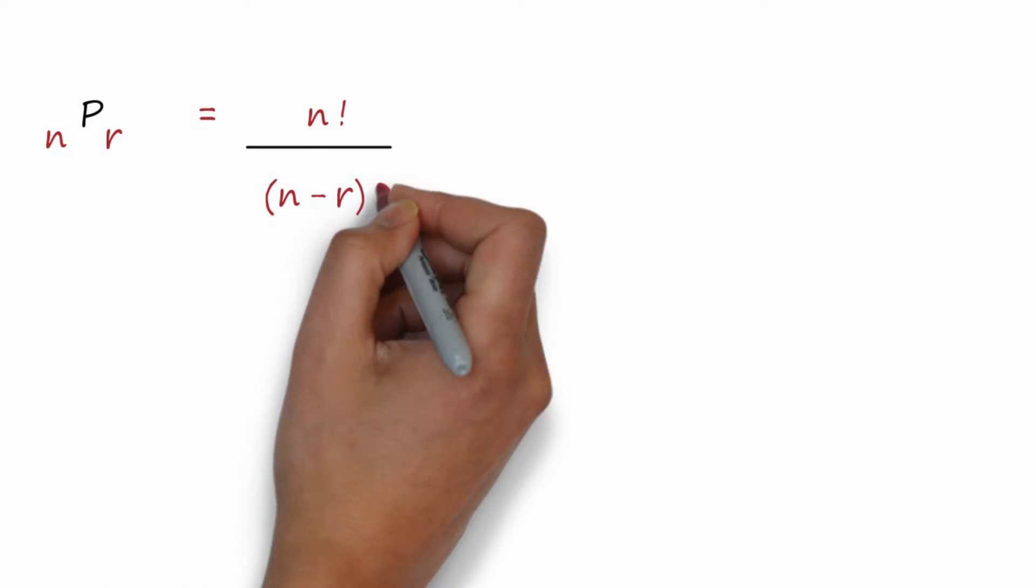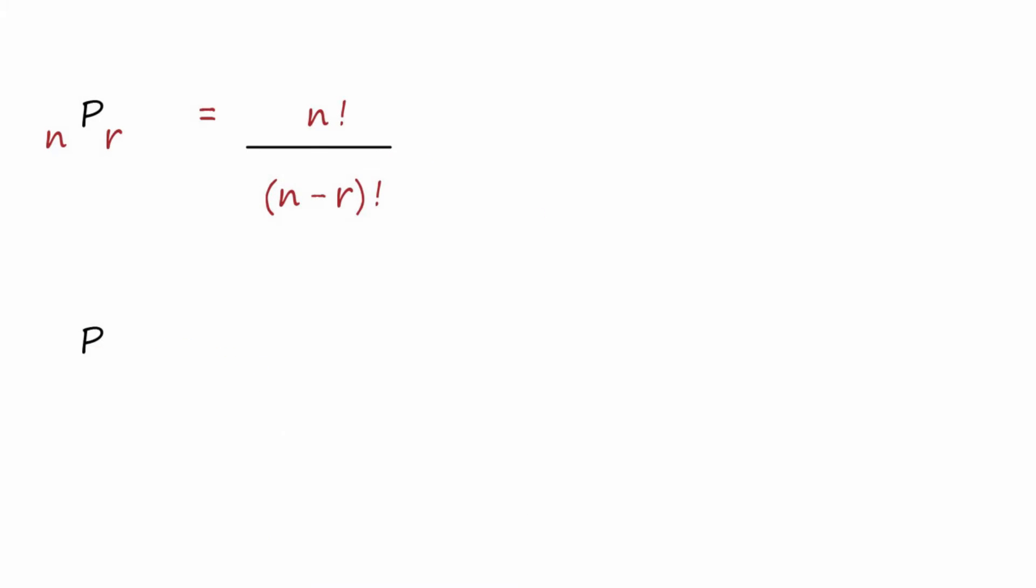Let's see the formula that makes it equal six. Permutation of N things taken R at a time equals N factorial over, and then we take the difference, N minus R factorial.